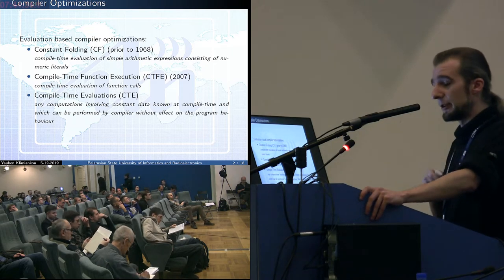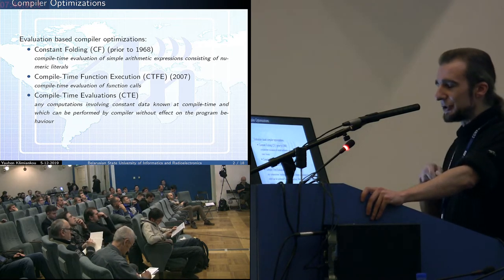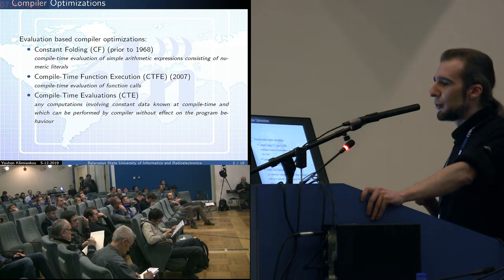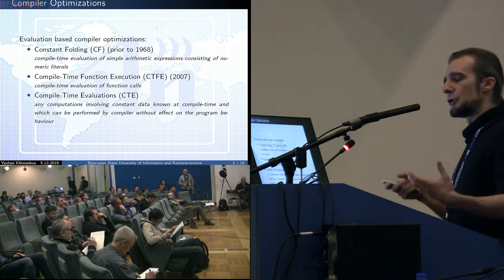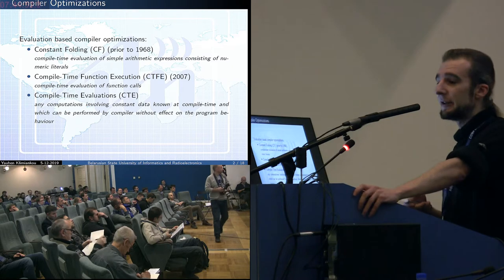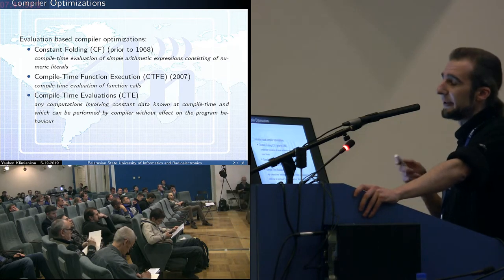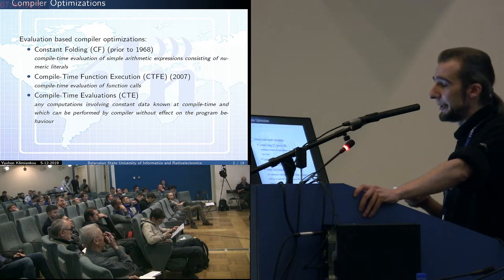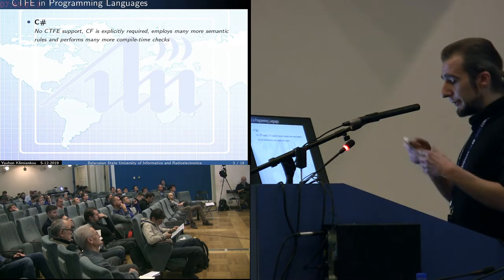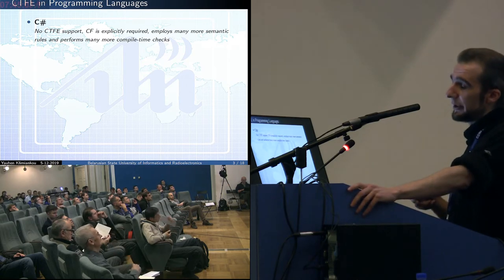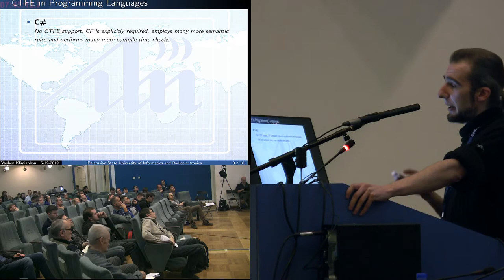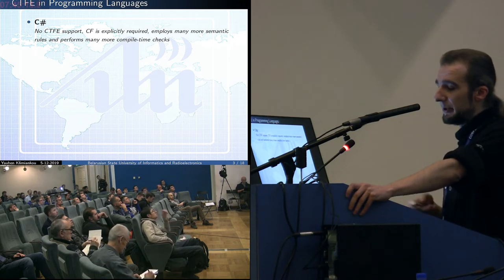There is a more generalized definition I suggest: considering calculation at the compilation level, because there are scenarios where a compiler can actually run optimization and calculate some values at the compilation stage but these values do not fall into certain constant scenarios. Let's look into several examples of how different programming languages work with different types of optimization at the compilation stage. The first one is C#.